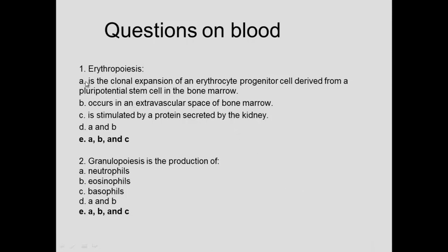A couple of questions. Erythropoiesis is a clonal expansion of erythrocyte progenitor cells derived from pluripotent stem cells of bone marrow — yes. It occurs in the extravascular space of the bone marrow — yes. It is stimulated by a protein secreted by the kidney — yes.